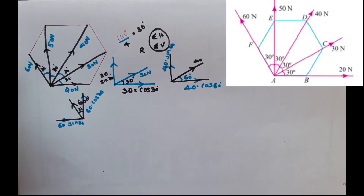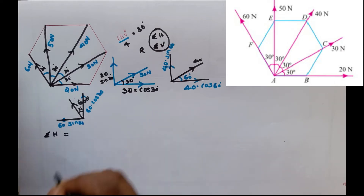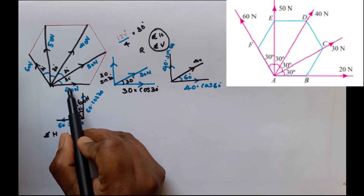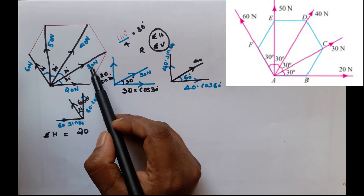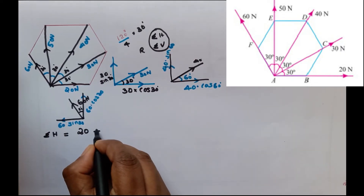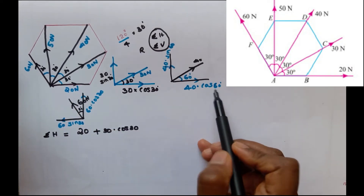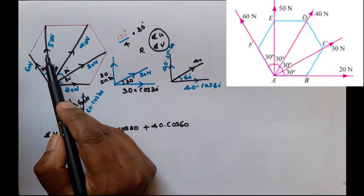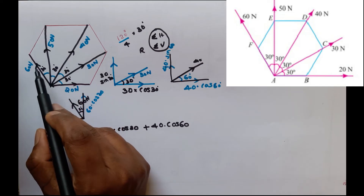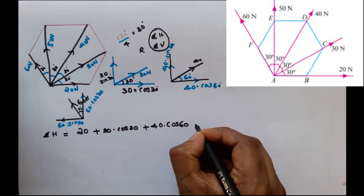Now we calculate sigma H, the sum of horizontal components. The 20N force acts horizontally to the right — positive. Plus 30 cos 30 (positive, acting right). Plus 40 cos 60. The 50N force is vertical so it has no horizontal component.